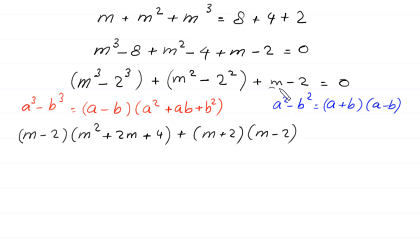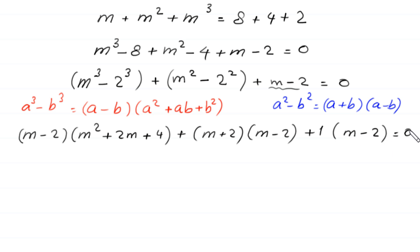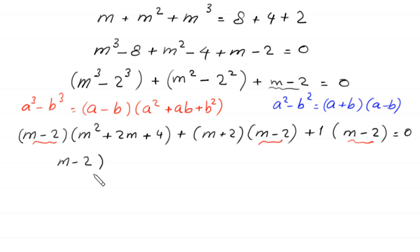From the three terms we can factor out (m - 2), leaving (m - 2)[(m² + 2m + 4) + (m + 2) + 1] = 0, which simplifies to (m - 2)(m² + 3m + 7) = 0.